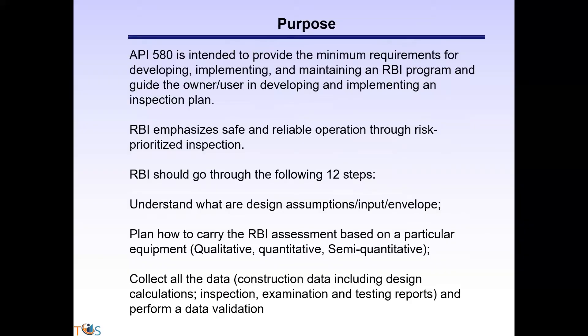You need to know about the purpose of RBI and the scope of RBI. There are 12 steps, so you should know the first step — you should know what the design assumptions are. You know the corrosion philosophy; normally they say three millimeters every 25 years is the corrosion allowance for most carbon steel material.